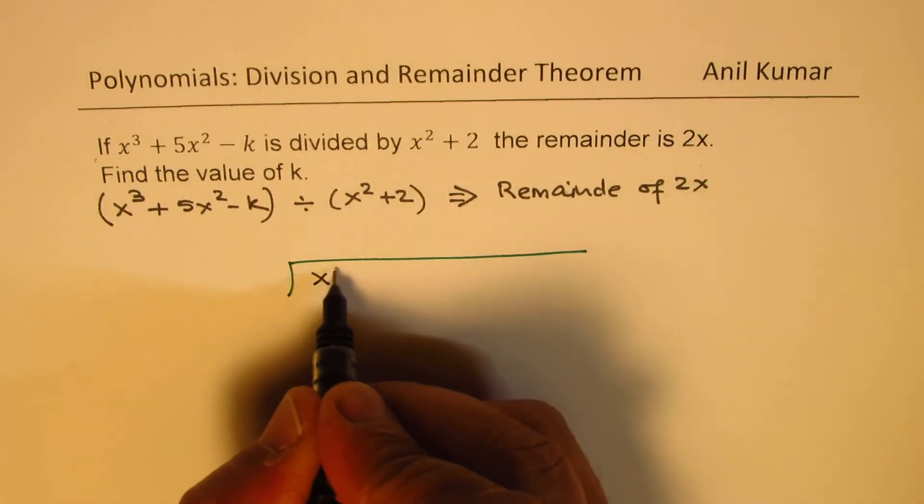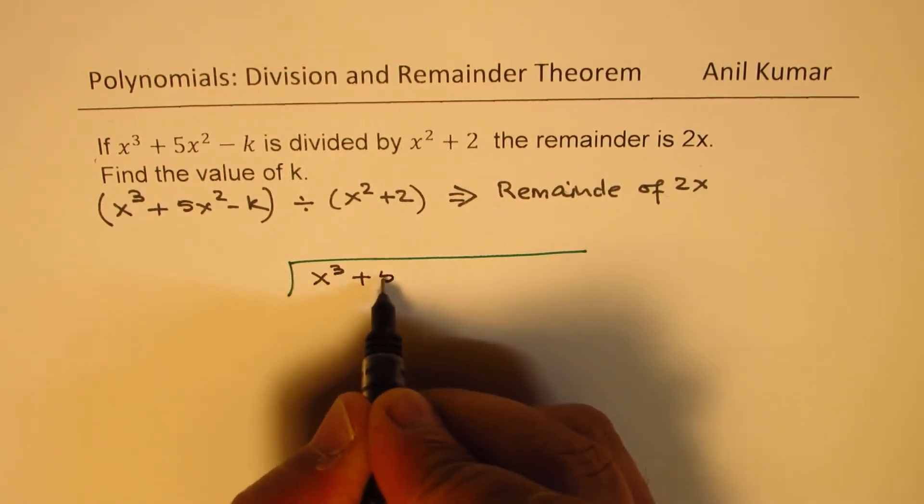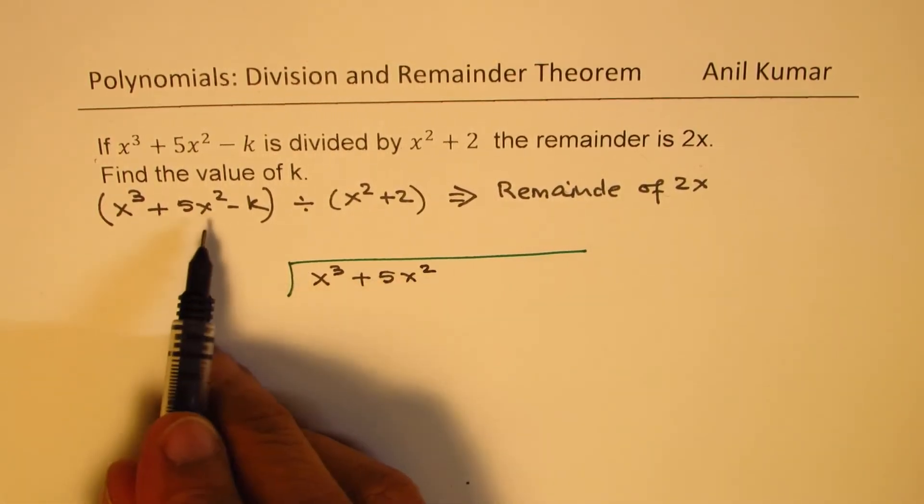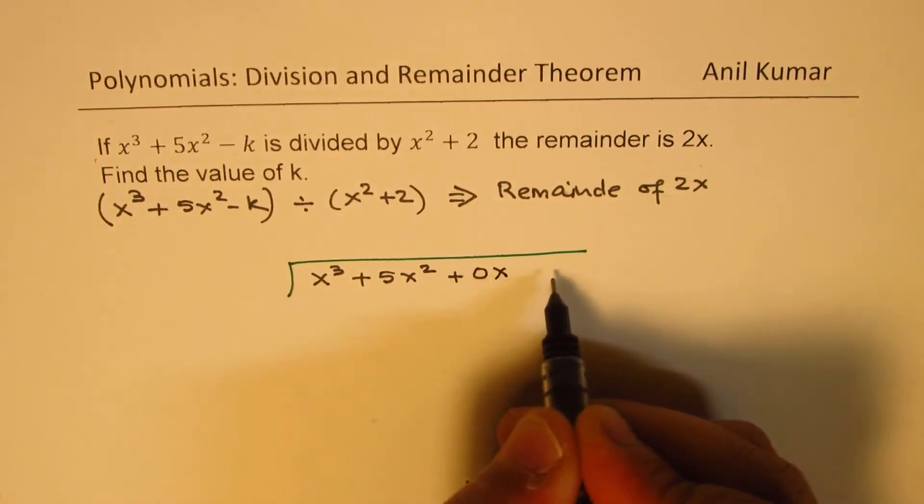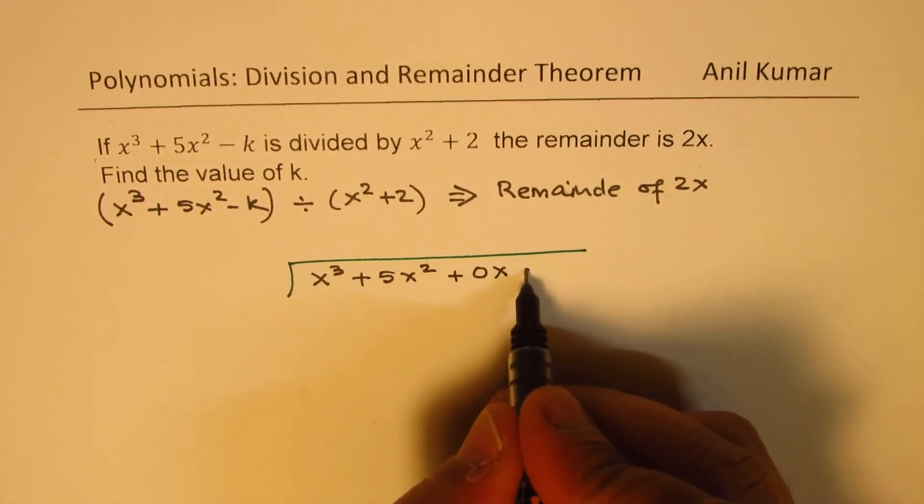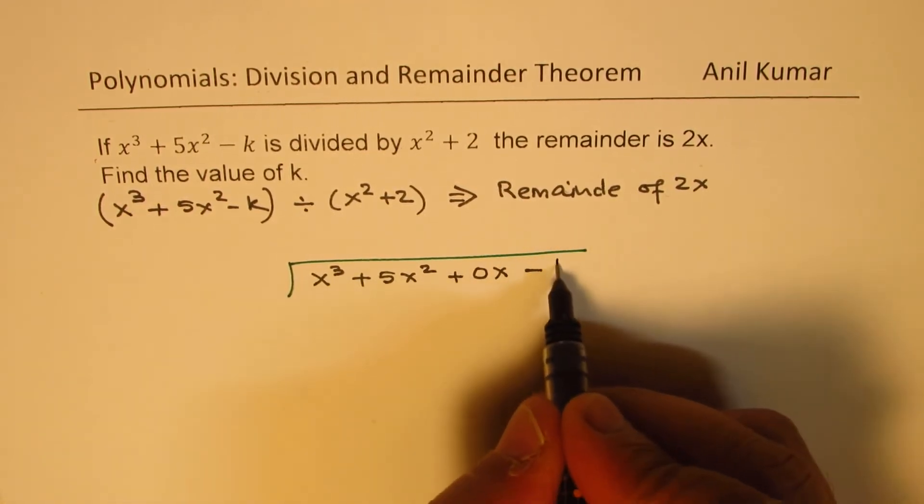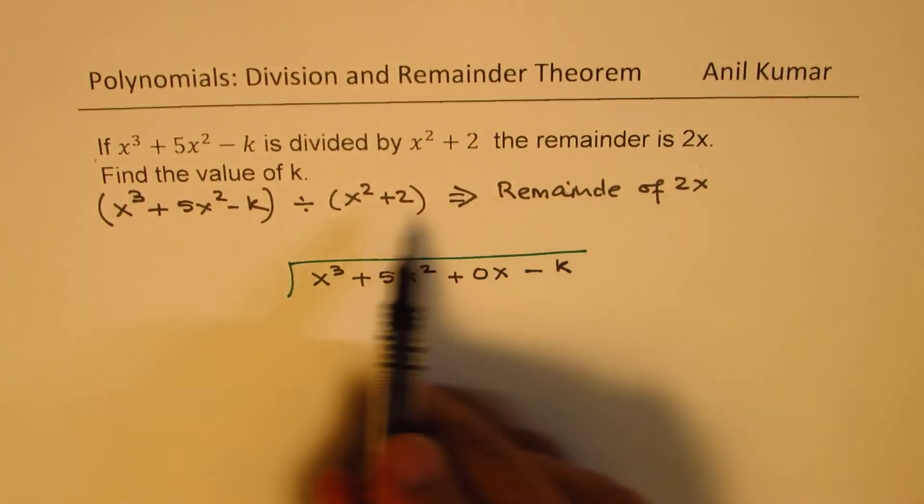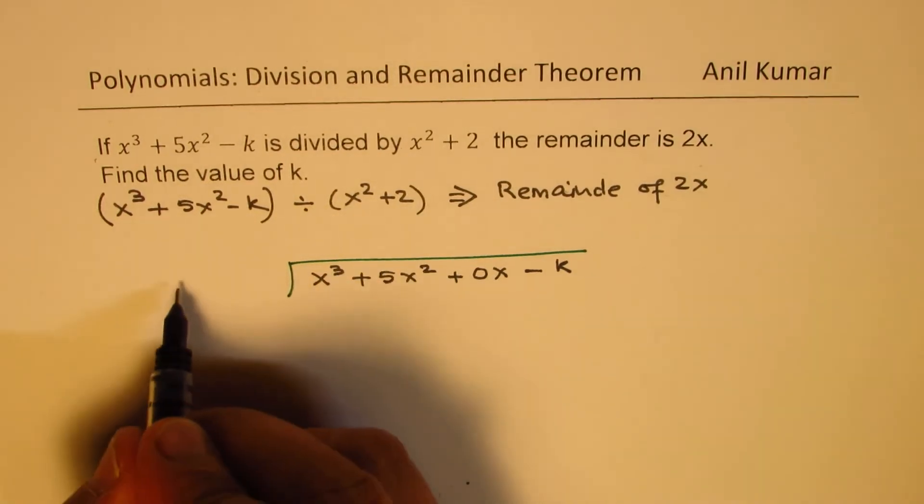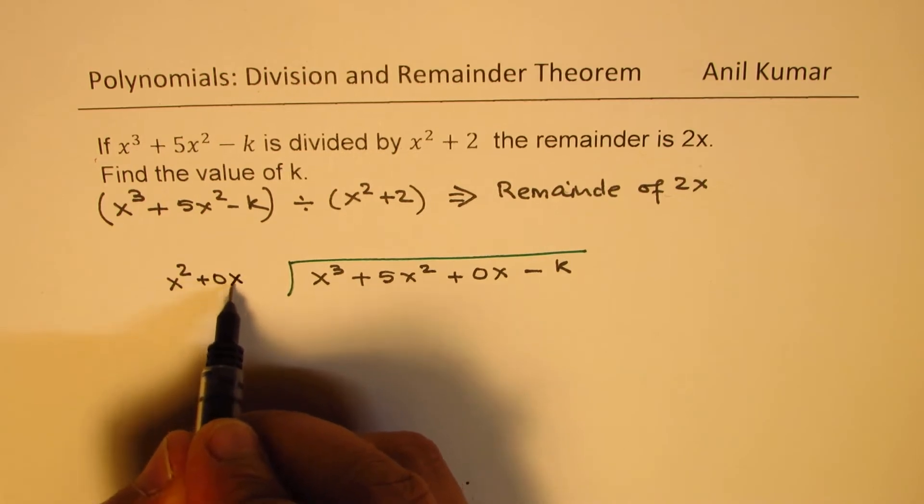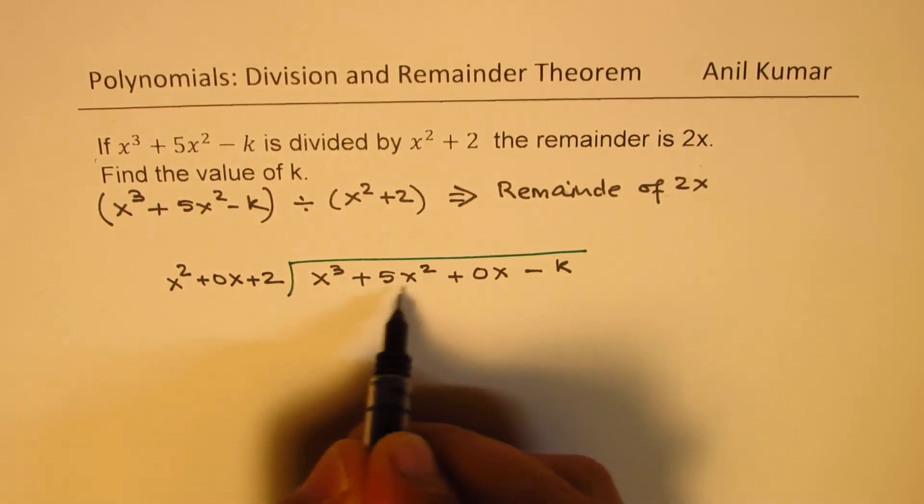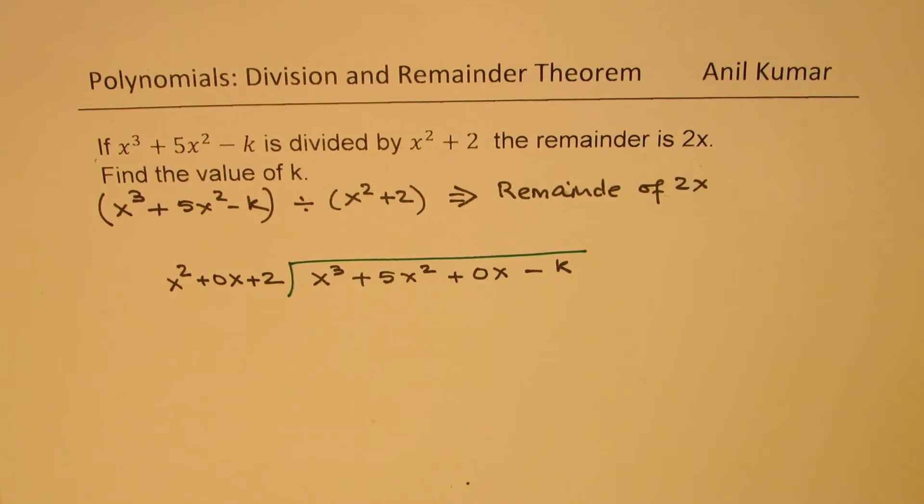x cubed plus 5x squared. Now, the x term is missing here, so we use a placeholder, 0x. That is the placeholder. And then we have minus k here. The divisor is x squared plus 2. Here also, we need a placeholder for x. So this placeholder helps to align the values.